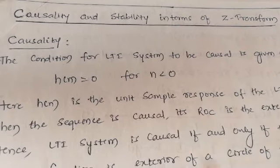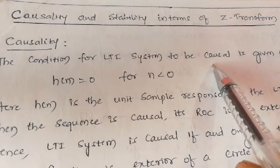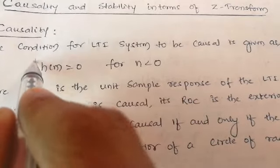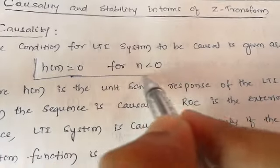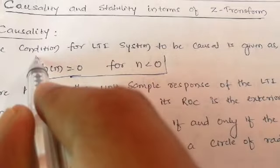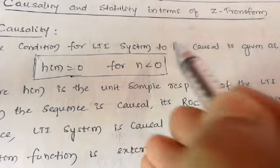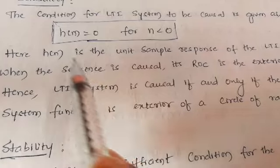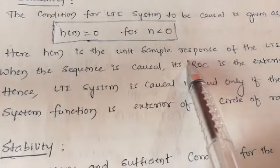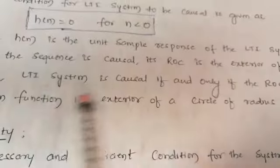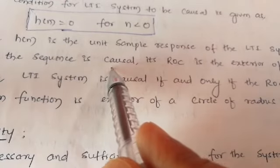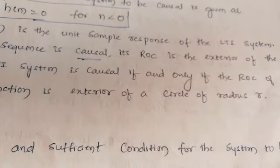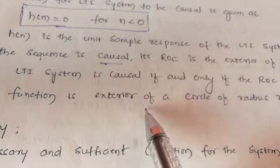First case: causality. The condition for an LTI system to be causal is given as H(n) should be equal to 0 for n less than 0. This is the condition for a system to be causal, where H(n) indicates the unit sample response of the LTI system. When the sequence is causal, its ROC is the exterior of the circle.